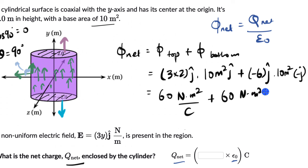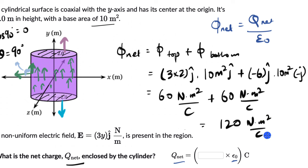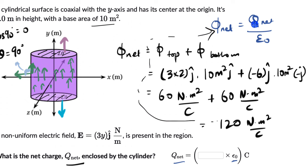Adding them together, the total net flux is 60 + 60 = 120 N·m²/C. Substituting into Gauss's Law, q_net = 120 ε₀ coulombs.